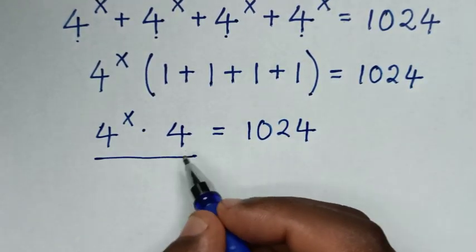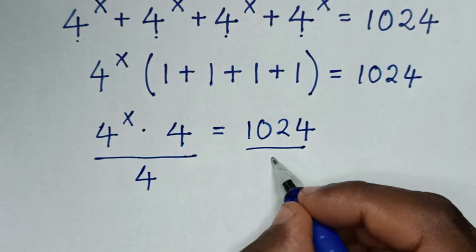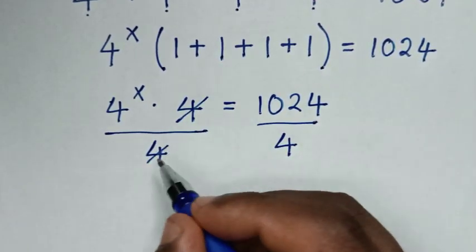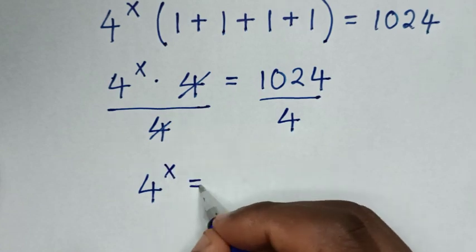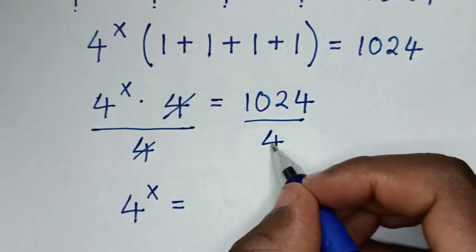Then we will divide by 4 on both sides. So 4 and 4 will cancel, then it will be 4^x equals... From here, 4 into 10 divided by 4 will be 2, which is 8.